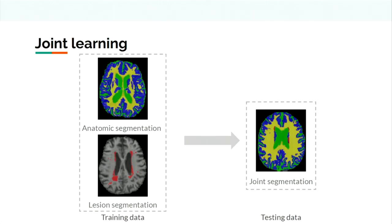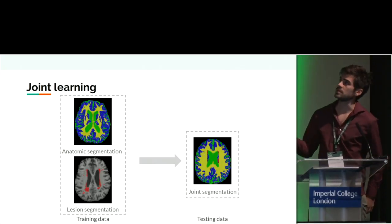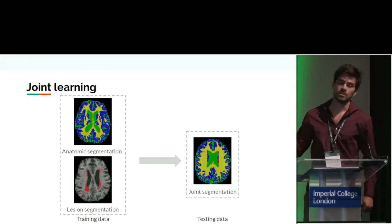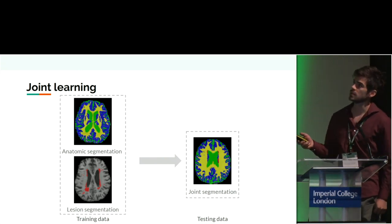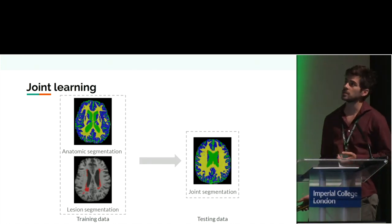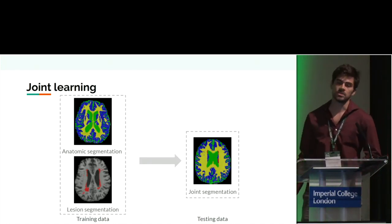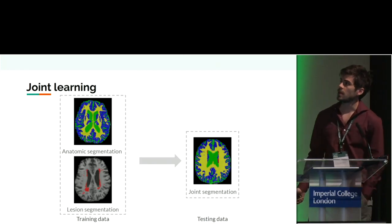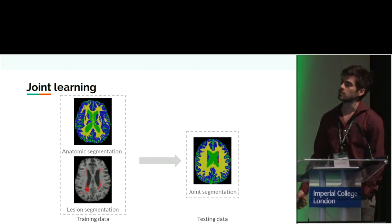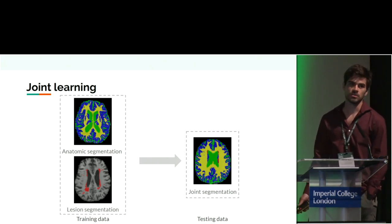The joint learning problem is basically when we want a model that performs segmentation on two different tasks. In this case, anatomical segmentation and lesion segmentation of white matter hyperintensities. But we only have training datasets that have either the anatomical tissues or the lesion segmentation. This is a problem because if you want to train a regular U-Net with regular cross entropy, it works really badly.